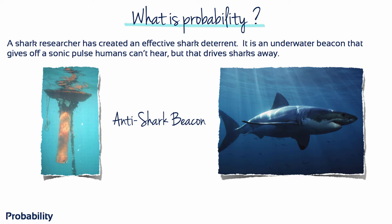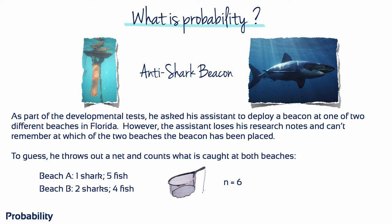Let's talk through another way to illustrate this. A shark researcher has created an effective shark deterrent — an underwater beacon that gives off a sonic pulse humans can't hear, but that drives sharks away. As part of the developmental tests, he asked his assistant to deploy a beacon at one of two different beaches in Florida. However, the assistant loses his research notes and can't remember at which of the two beaches the beacon has been placed. To guess, he throws out a net of size n equals 6 and counts what is caught at both beaches. At beach A, the net catches one shark and five fish, while at beach B, the net catches two sharks and four fish.